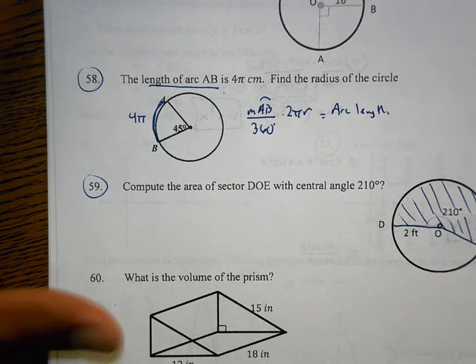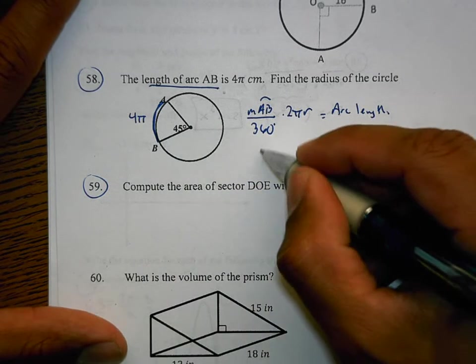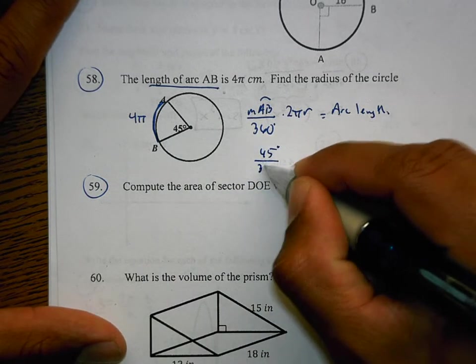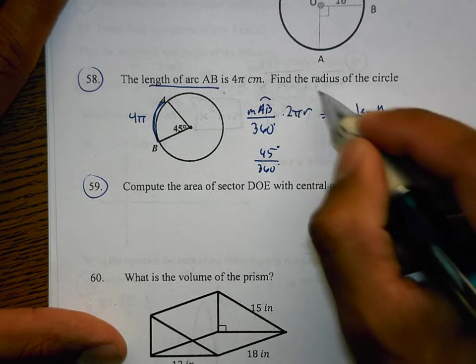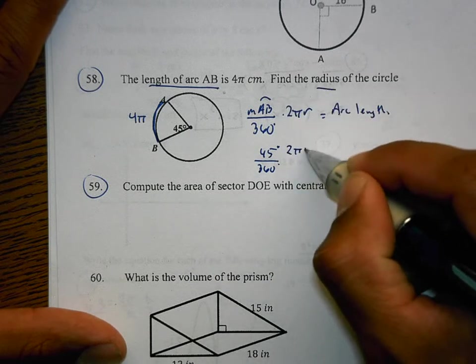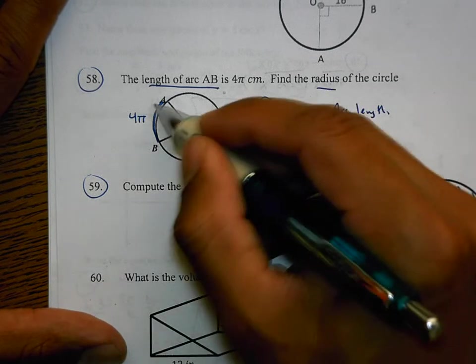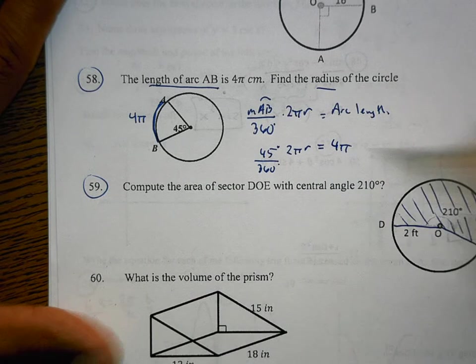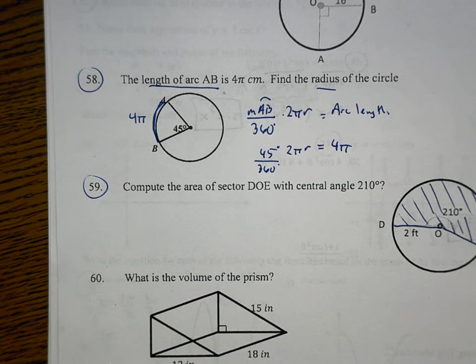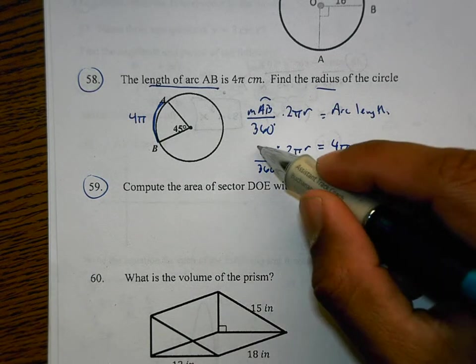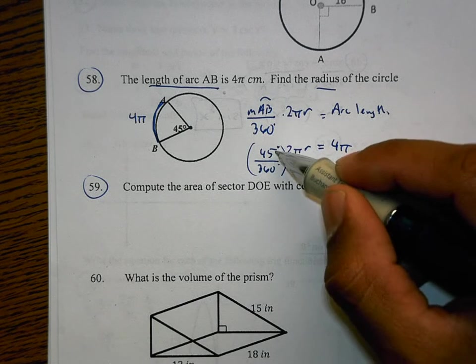And this is how many degrees out of 360. That's going to equal arc length. That's the formula we had in our notes. Well, how many degrees is this thing? It's 45 degrees out of 360, and what we need to do is we need to figure out what r is. And we already know what the arc length is, it's 4π.